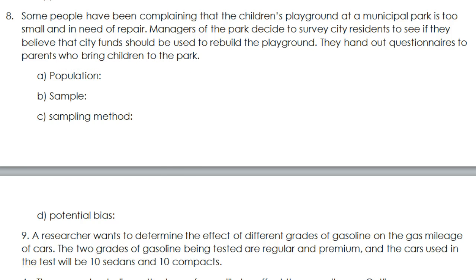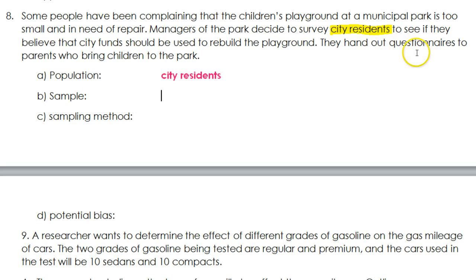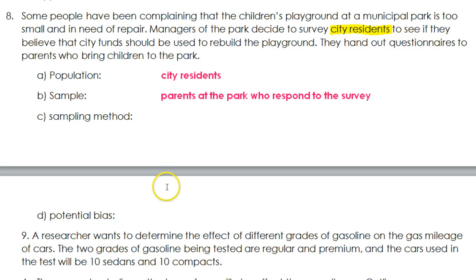What's the population? Well, the population is hinted at right here — they're trying to survey city residents, so that's the population. The sample is going to be whoever is actually filling out the questionnaires. In this case it mentions parents who bring children to the park — they're the ones who get the questionnaires. So the sample is parents at the park who respond to the survey.